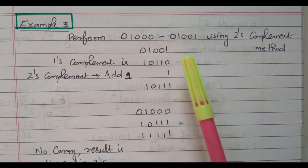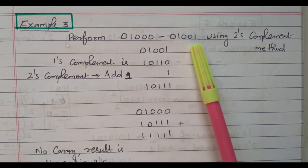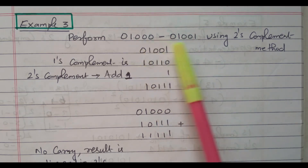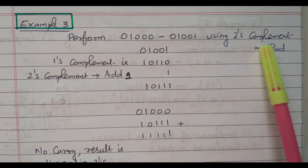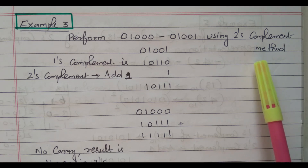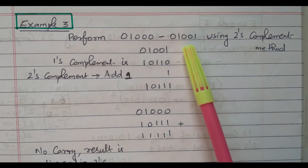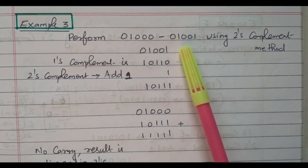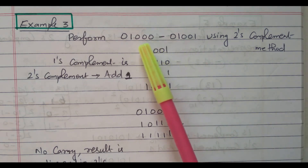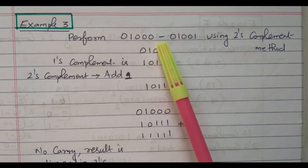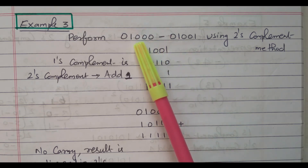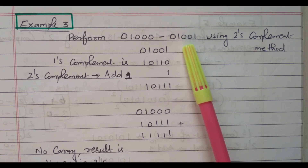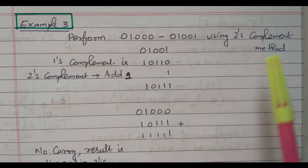Perform 01000 minus 01001. The 2 binary numbers are given; we need to subtract these binary numbers using the 2's complement method. What is the 2's complement method? We need to take the 2's complement of the second number, then that 2's complement is added with the first number. In order to perform the subtraction, we are doing addition — addition of the first number and the 2's complement of the second number. So that is the process called the 2's complement method.